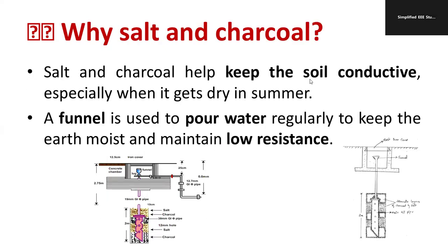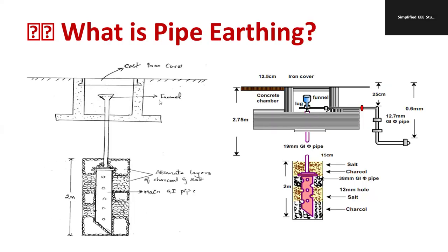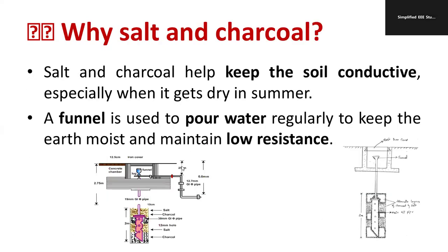Charcoal and salt keep the soil conductive. The resistance of the soil should be as minimum as possible to send the fault current effectively. A funnel is used to pour water to keep the earth moist and maintain low resistance, because as moisture increases, earth resistance is reduced.